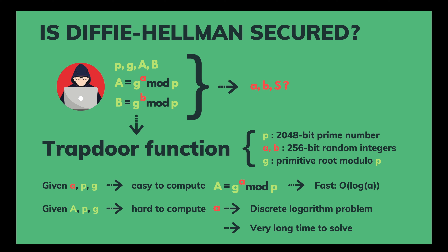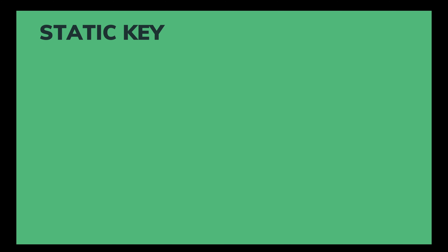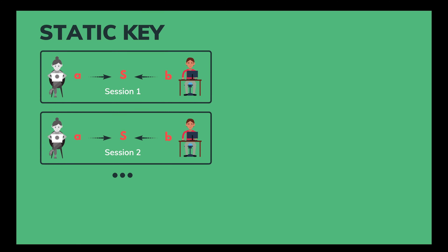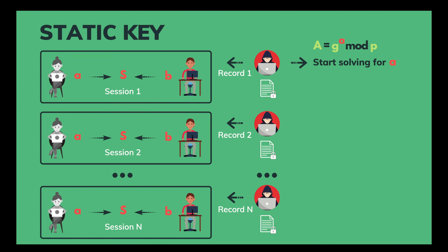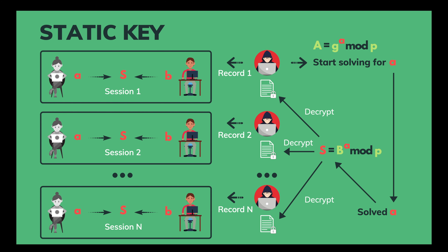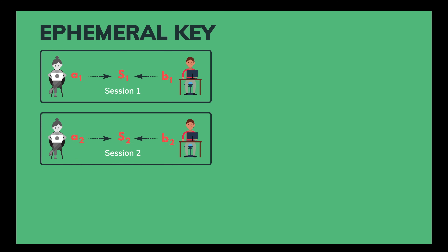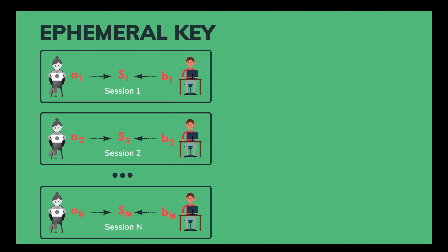A long time to solve doesn't mean unsolvable. If Alice and Bob use the same private keys — small a and small b — for every session, Harry can record all those sessions and start solving for small a from session 1. Although it would take him a long time, say after session n he gets the right small a, he can then compute the secret number s and decrypt all the recorded conversations. How can we prevent it? The answer is ephemeral keys. We use different private keys for each session, so even if Harry can solve the secret key for one session, he cannot use it for the others. This is called perfect forward secrecy in TLS. So now you understand what Diffie-Hellman ephemeral means — it's just Diffie-Hellman with ephemeral or short-lived keys.